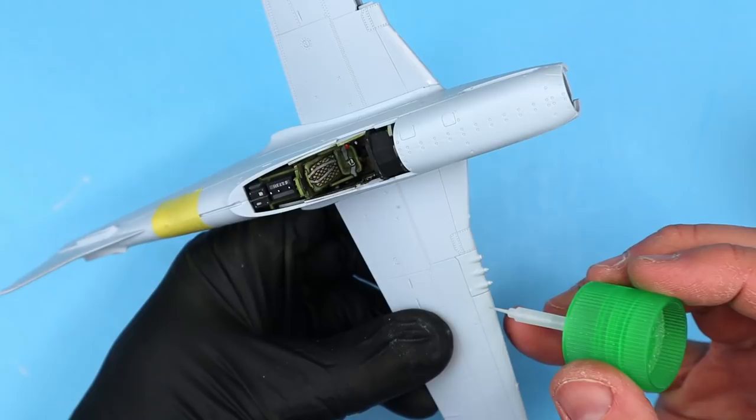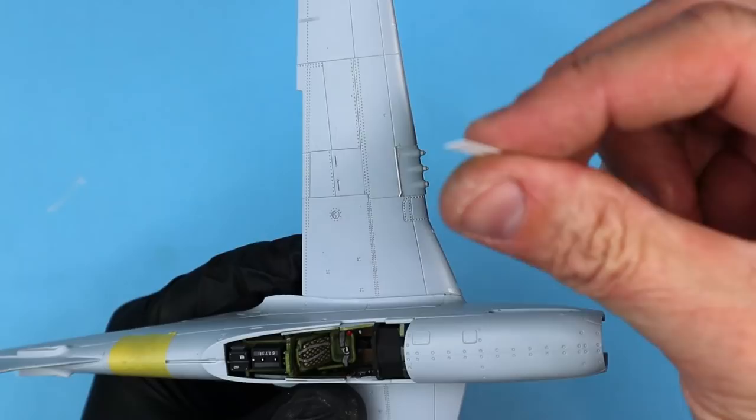Now I installed the machine gun pieces to the wing section. The fit here was decent but not perfect.